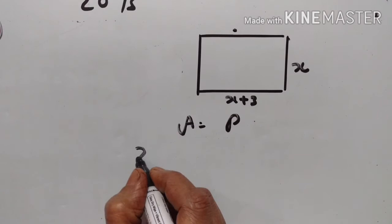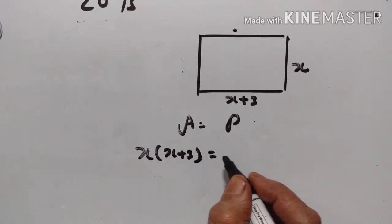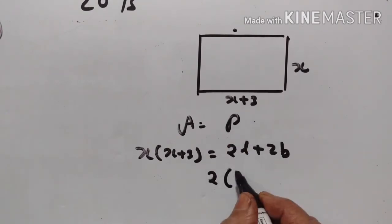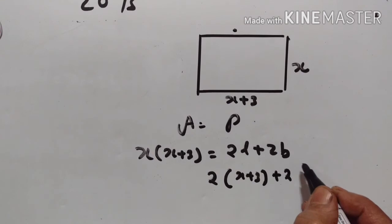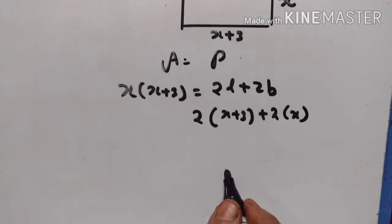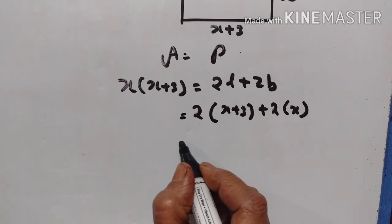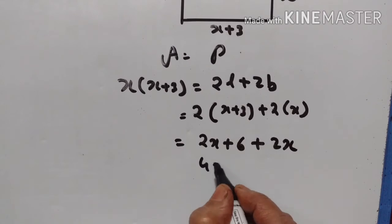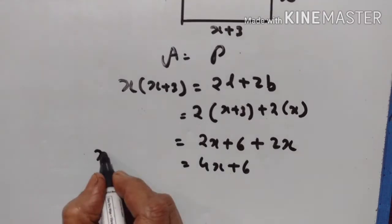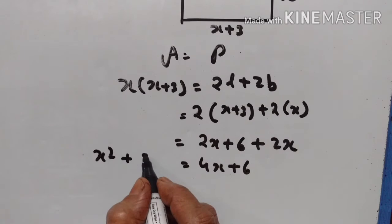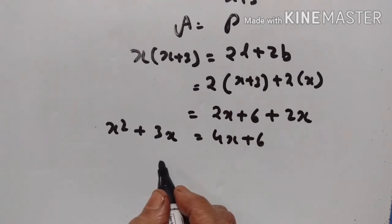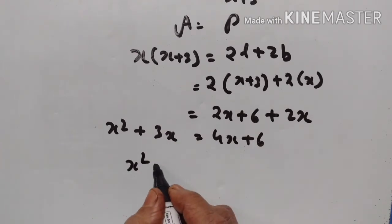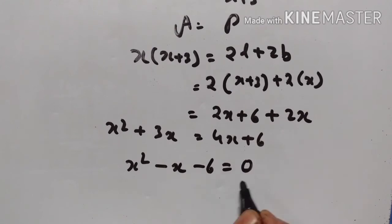Area is equal to x into (x plus 3) — length into breadth. Perimeter is equal to 2L plus 2B, which is 2 into (x plus 3) plus 2x. This is equal to 2x plus 6 plus 2x, giving 4x plus 6. So area equals x squared plus 3x, and setting that equal to 4x plus 6 gives x squared plus 3x minus 4x minus 6 equals 0.